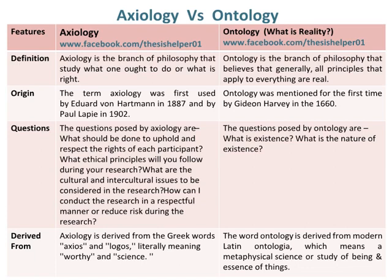The questions posed by axiology are: What should be done to uphold and respect the rights of each participant? What ethical principles will you follow during your research? What are the cultural and intercultural issues to be considered in the research? How can I conduct the research in a respectful manner or reduce risk during the research? Whereas, the questions posed by ontology are: What is existence? What is the nature of existence?